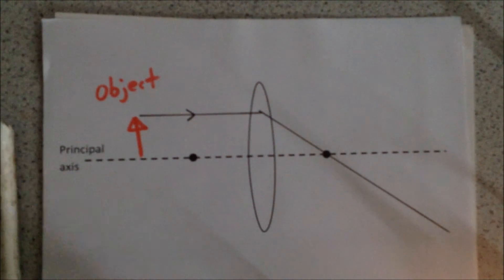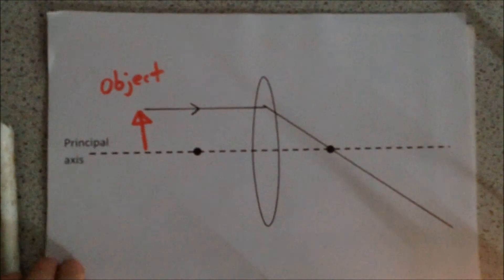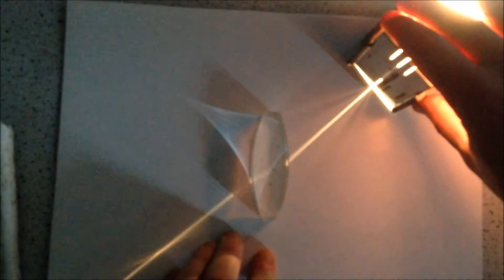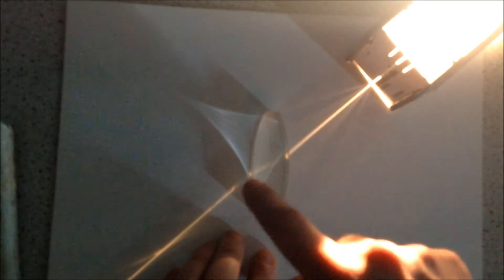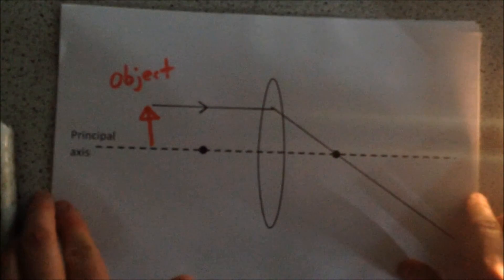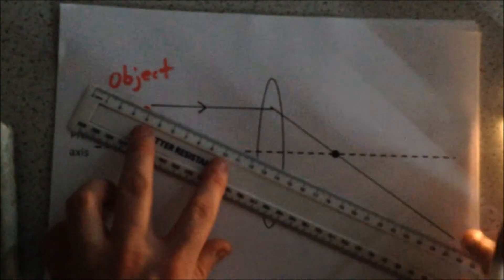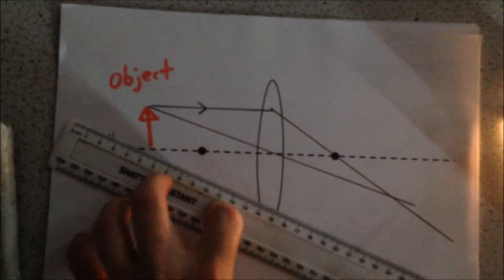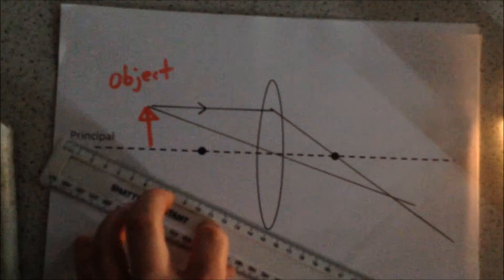That's one ray. The second ray we draw goes right through the centre of our lens. If we shine light through the centre of our lens, it refracts at the edge, travels through the block, refracts at the edge again, and comes out pretty much on the same path that it went in. So our second ray goes straight through the centre, and as we saw, there's pretty much no deviation of the light. We draw it from the top of our object straight through. Where those two lines cross, that is where our image is formed.